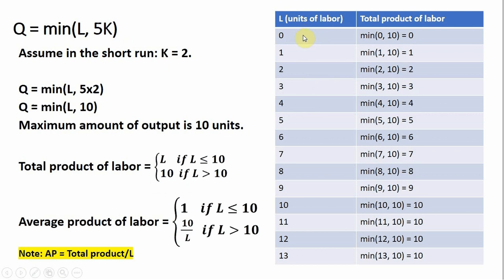Labor is the variable input in the short run and capital is fixed at 2. If L is 0, the minimum between 0 and 10 is 0. If L is 1, the minimum between 1 and 10 is 1 — that's the amount of output, so with one worker we produce one unit of output. If we plug 2 into the production function, output will be 2, and so on. If we plug 10 in for L, the minimum of 10 and 10 is 10. If we plug in any value of L greater than 10, we're still only producing 10 units of output.